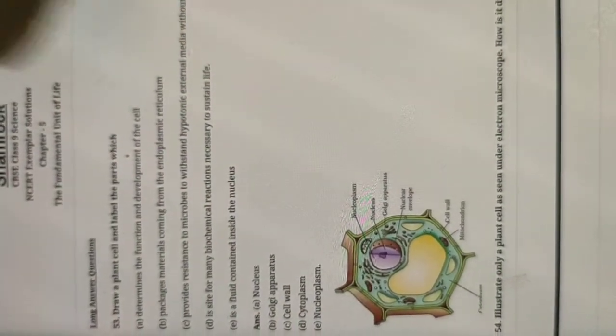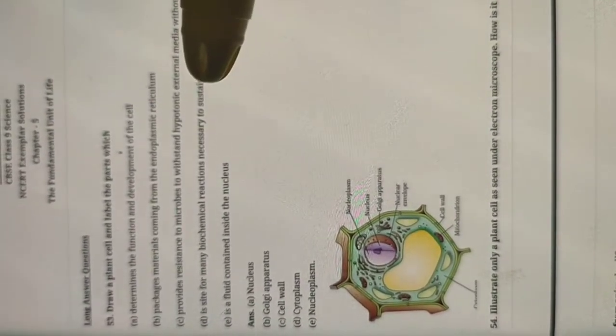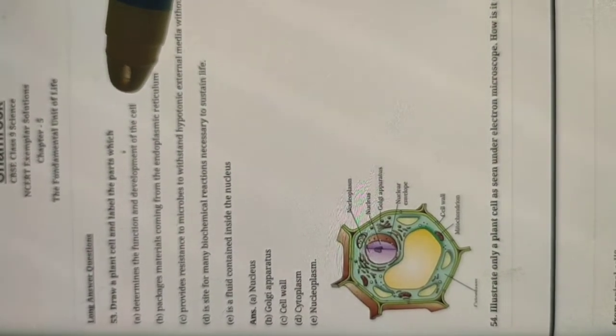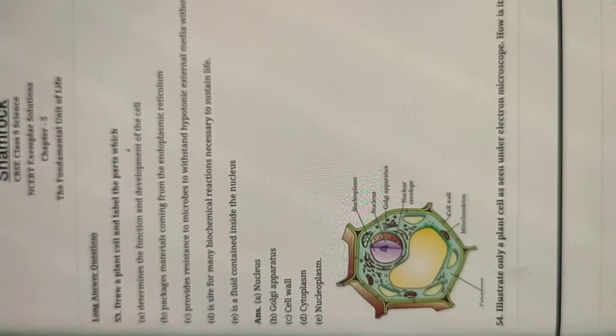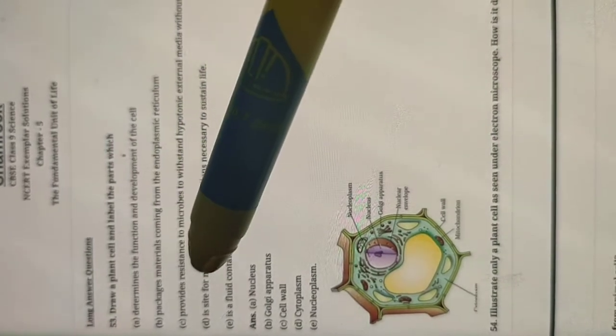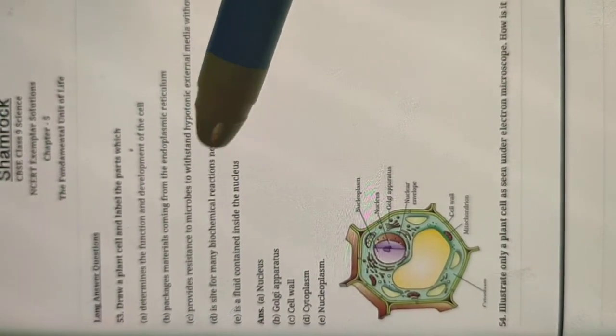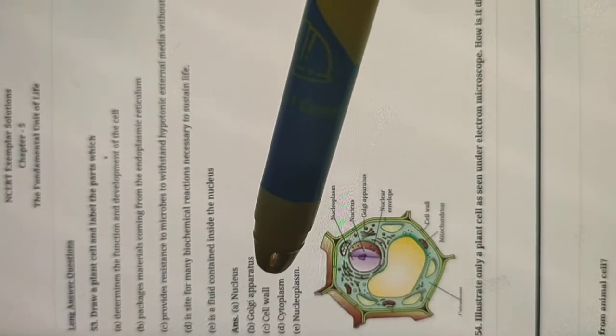For example, the first clue says: determines the functions and development of the cell — which part does this? That is nothing but the nucleus. Second: packages material coming from ER — whatever gets transferred from ER is always packed with the help of the Golgi apparatus. Third: provides resistance to microbes and helps withstand hypotonic external media without bursting — that is the cell wall.